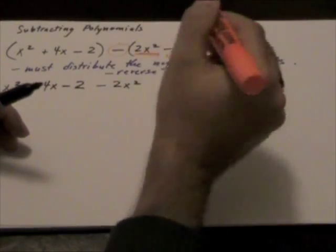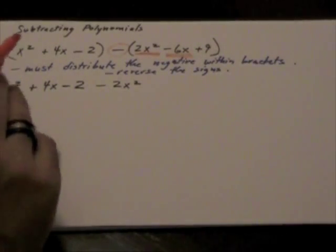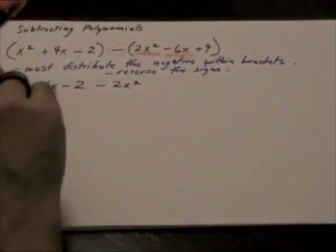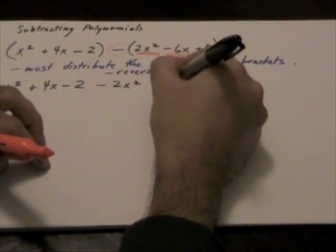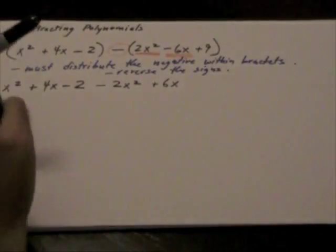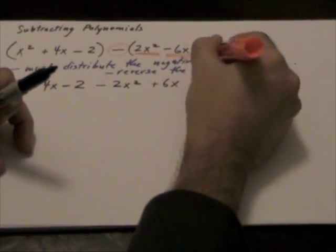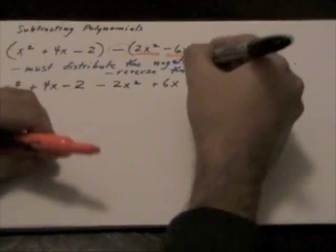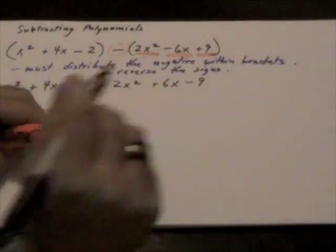This negative 6x is negative inside the brackets, but because we reverse it, it becomes positive 6x. And this positive 9, the reverse, is minus 9.